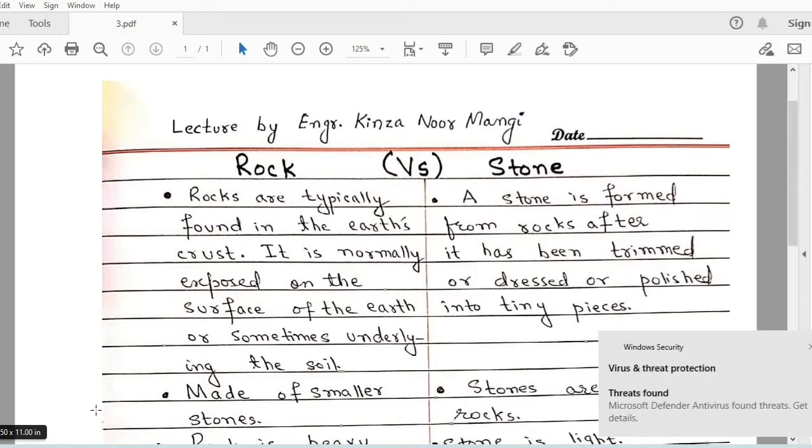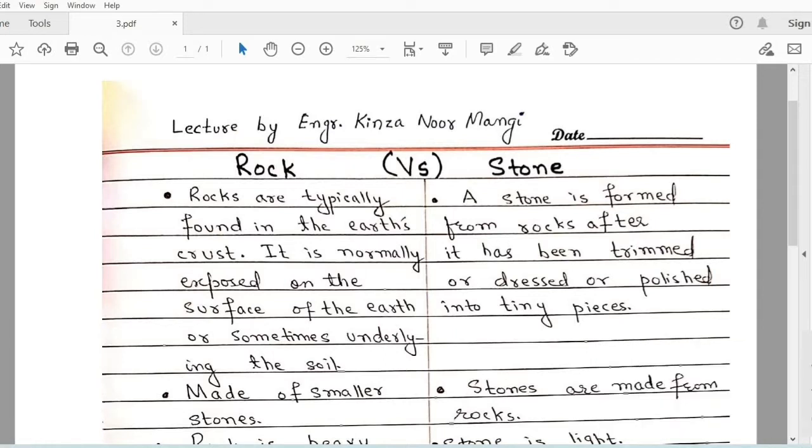Before moving to the differences between rock and stone, let me define basically what rock is and what stone is. Rock: the solid mineral material forming part of the surface of the earth. Basically rock is the solid mineral material that is found on the earth crust.